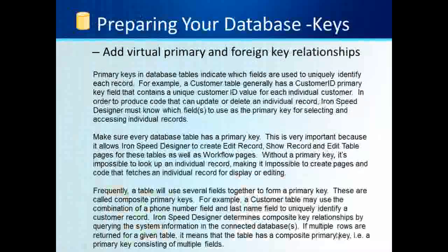Let's talk about keys. We spoke about them briefly before, but you have to understand that primary keys and foreign keys come from your database, but sometimes they do not, so IronSpeed has the ability to add virtual primary and foreign key relationships. Primary keys in database tables indicate which fields are used to uniquely identify each record. For example, a customer table generally has a customer ID — a primary key field that contains a unique customer ID value for each individual customer. In order to produce code that can update and delete an individual record, IronSpeed Designer must know which fields to use as the primary key.